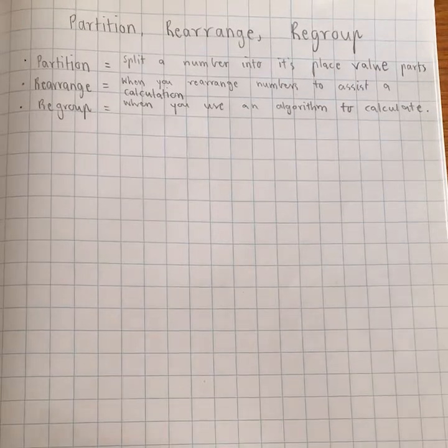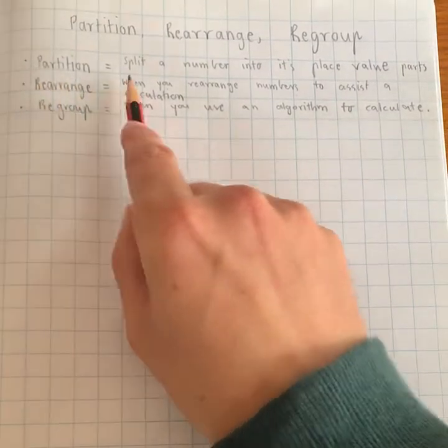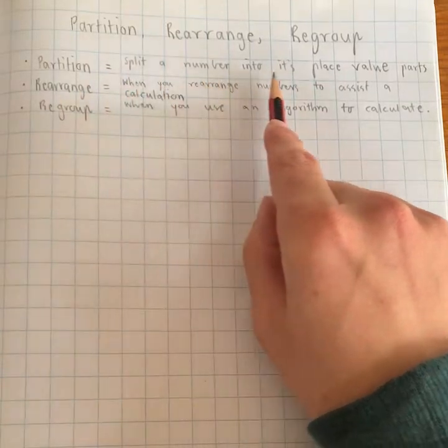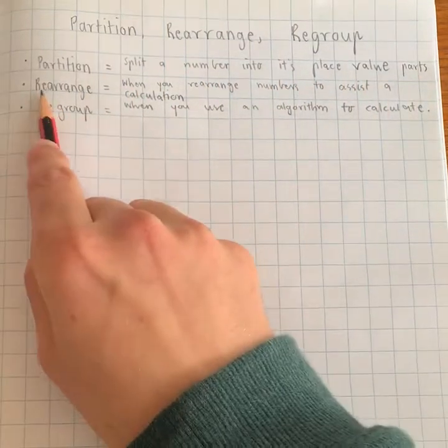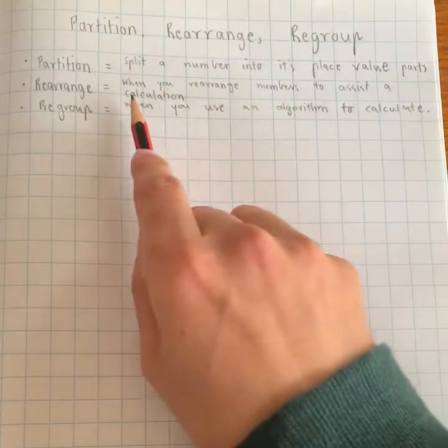So I'm going to go through them first and give a bit of a definition. So first one is to partition. So that's when we split a number into its place value parts. The next one is rearrange, when you rearrange numbers to assist a calculation.